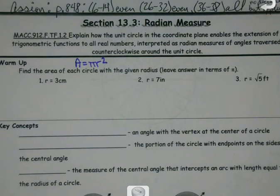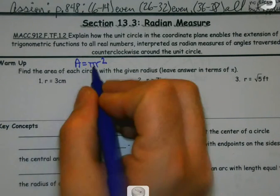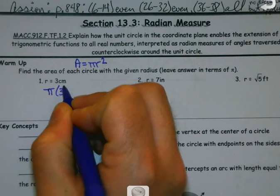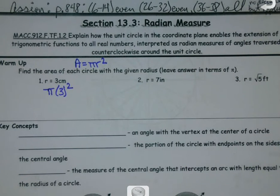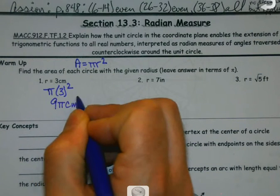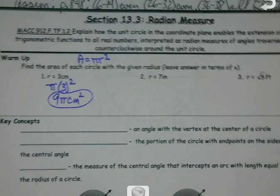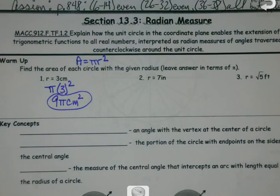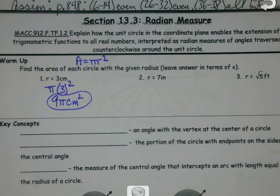So since we're going to leave the answers in terms of π, which is going to kind of lead us into radians, because radians actually use π as part of their solution. All we're going to do here is to get my area, I just do π times my radius squared. Squared just means I multiply that number by itself. So 3 times 3 would be 9π square centimeters, because area is a two-dimensional analysis.